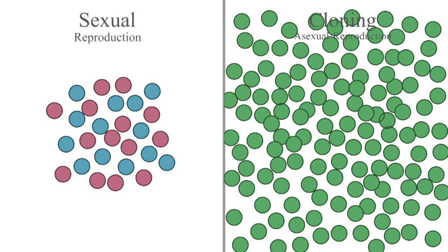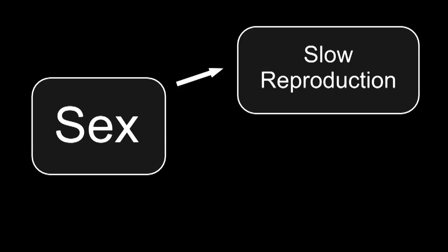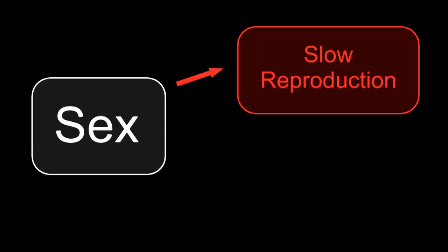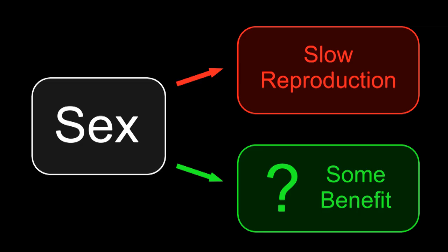The males are sitting around while the females do the work. So sex is actually slowing down reproduction. It's harmful. It would only make sense to do this if sex had some benefit that outweighed the cost.